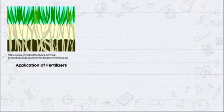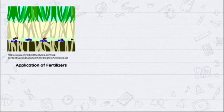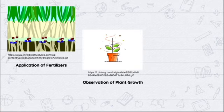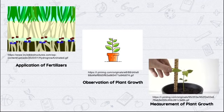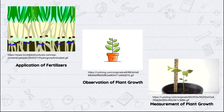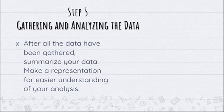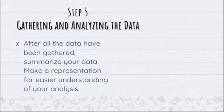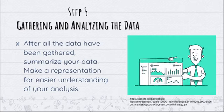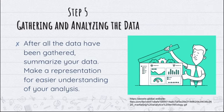When we apply fertilizers, the nutrients will be absorbed by the plants — that's according to our research — but we are not yet sure which fertilizer is the best. We observe the plant growth, then measure them and record the data in our data notebook. After the experimentation, we gather and analyze the data. In order to do that, we need to summarize our data. We are not just going to write down all observations — we need to arrange and organize them in a manner that we can understand easily. We need to make a representation for easier understanding of our analysis.